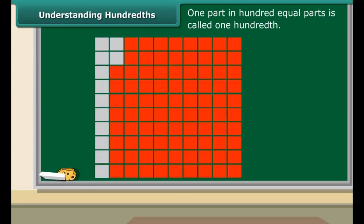Twelve shaded squares will make 12/100 or 0.12. Thirty-three shaded squares will make 33/100 or 0.33. Fifty-two shaded squares will make 52/100 or 0.52.